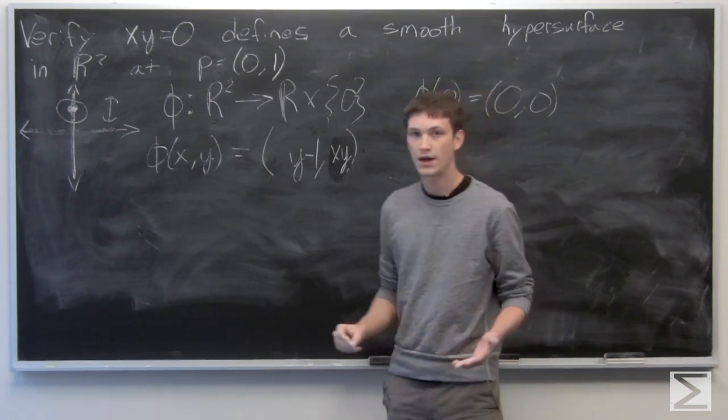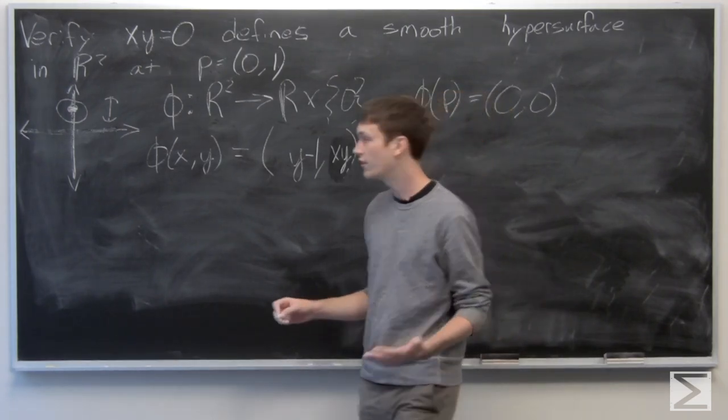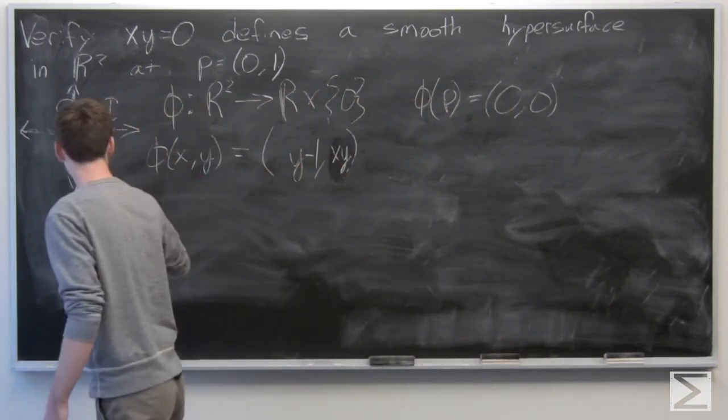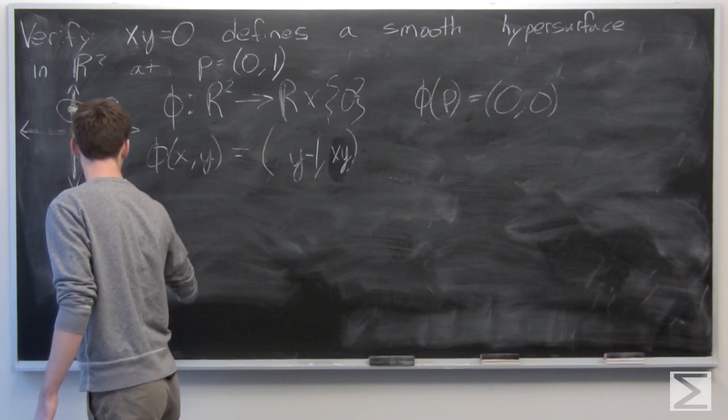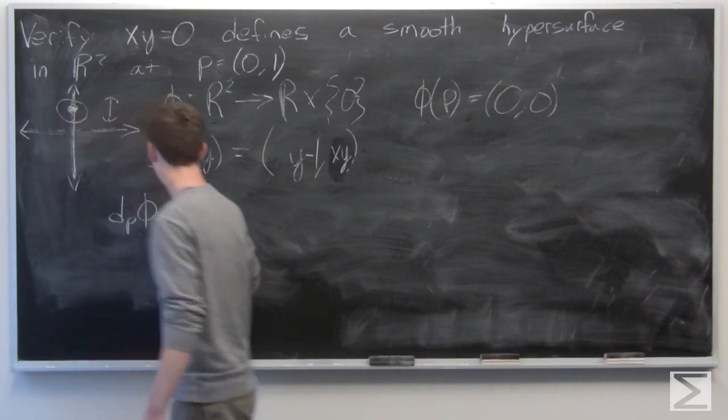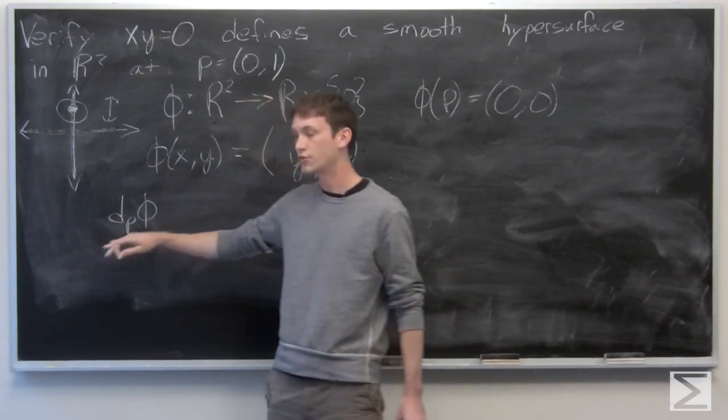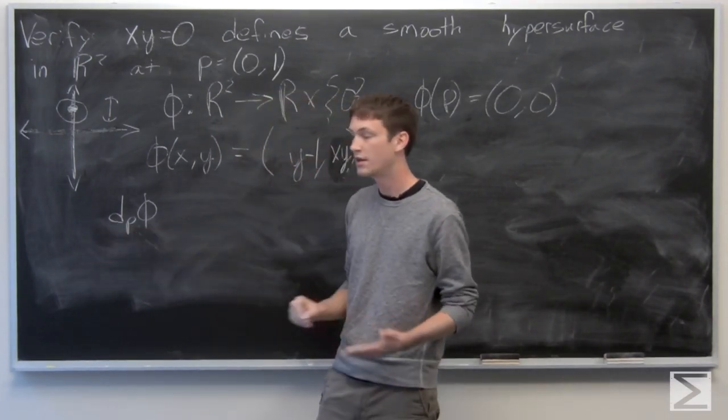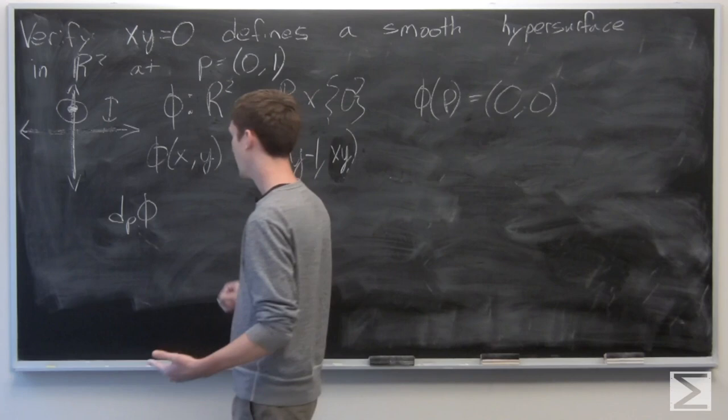So we'll do so by proving that the total derivative of phi at p is a bijection, so it has an inverse.